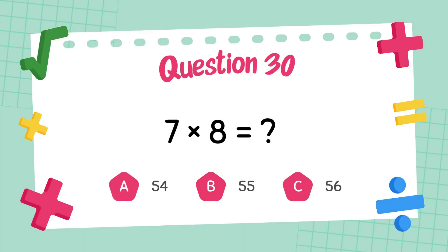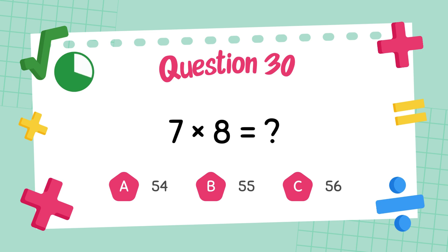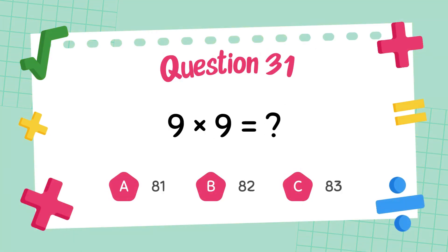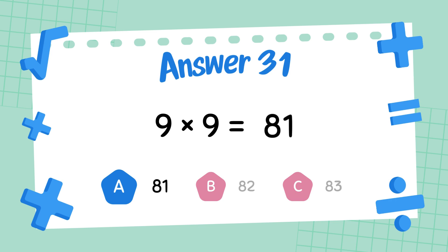What is 7 times 8? The answer is 56. What is 9 times 9? The answer is 81.